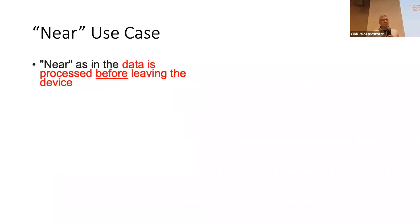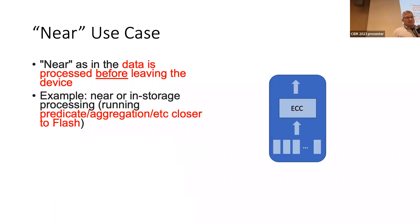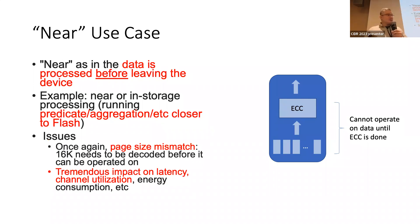Another case that we see as well, we call the near case, kind of the opposite. How close to the flash could we process data? Examples of this are if we push predicates, aggregation, joins, things like that onto the device. We cannot do that very deeply on the device because we cannot touch data that's not corrected. Because the page size is fixed, in some cases 16K, we think that the page in this case is too big for what we want to do. I showed you two cases where the page in one case is too small, the page in another case is too big.